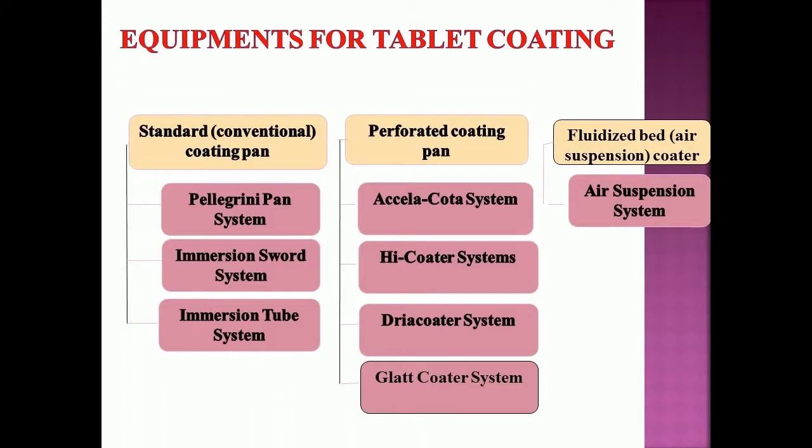Equipment for tablet coating includes: conventional coating pan, perforated coating pan, fluidized bed air suspension coater, immersion sword system, immersion tube system, Axle coater system, Pellegrini pan system, Dryer coater system, Glatt coater system, Hi-coater systems, and air suspension system.